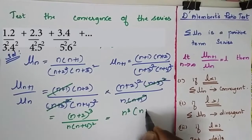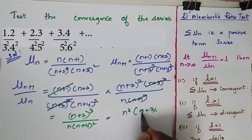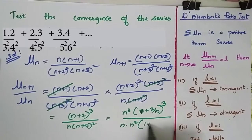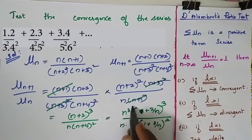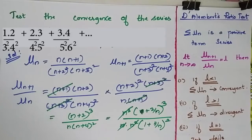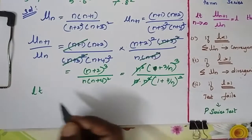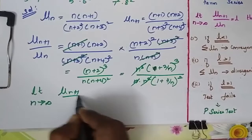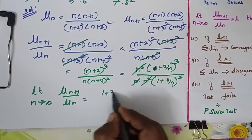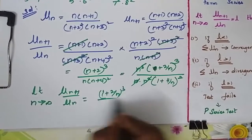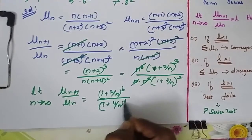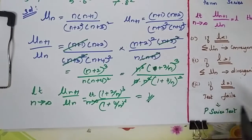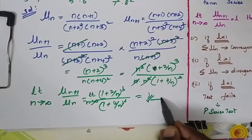When I take n commonly outside I will have n³ times (1 + 2/n)³ divided by n times n² times (1 + 4/n)². So n³ cancels. Now the limit as n tends to infinity of u(n+1) by u(n) is equal to (1 + 2/n)³ divided by (1 + 4/n)², which gives L = 1.